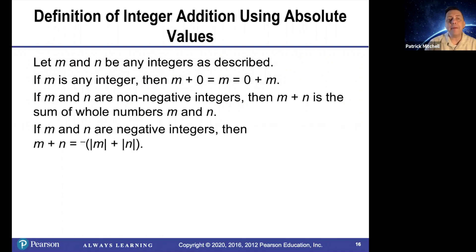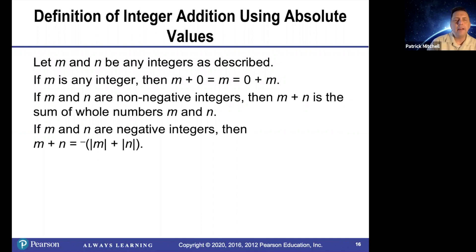If m and n are both negative, then m plus n is equal to the opposite of the sum of the absolute values of m and n.